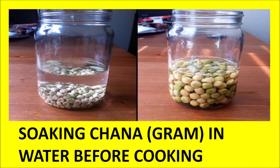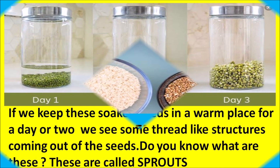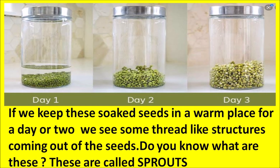This picture shows the soaking of chana or gram seeds in water before cooking. You can clearly see the difference in the size of the gram seeds — after soaking in water, the size of the gram seed becomes larger because it absorbs the water. Can you name some of the things that are generally soaked in water before using them? You must have seen your mother soaking nuts, rice, gram or pulses before cooking. If we keep these soaked seeds in a warm place for a day or two, we see some thread-like structures coming out of the seed. These are called sprouts.